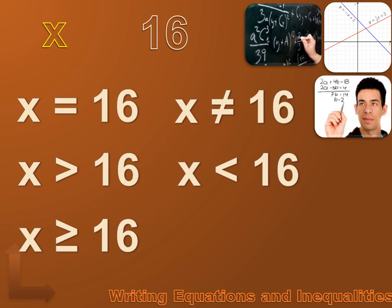x could also be less than or equal to 16 — no greater than 16. We'd write it as x is less than or equal to 16. That would include 16, 15, 14 and a half, minus 20 — any number that is no greater than 16.